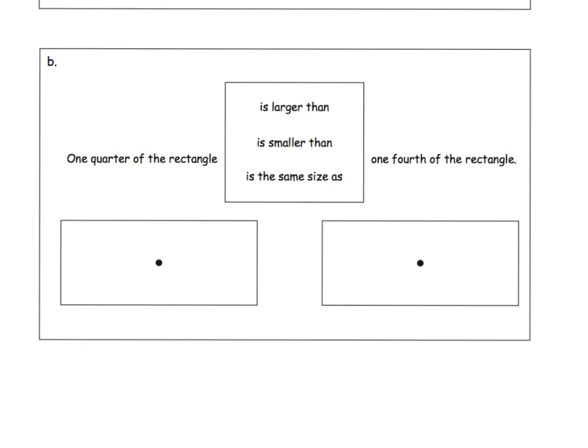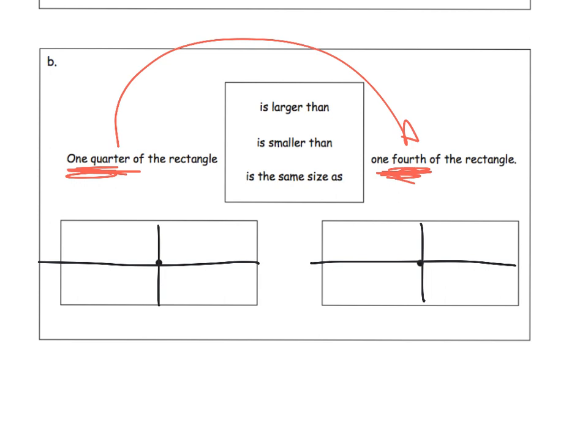And you get that same idea on question B. We're going to cut this rectangle into quarters. We're going to cut this rectangle into fourths. So now, parents and teachers, are you seeing? We're adding a new vocabulary word, fourths. So one quarter and one fourth, so that our students begin to see that one quarter and one fourth are the same. And so, of course, we're going to circle, is the same as.